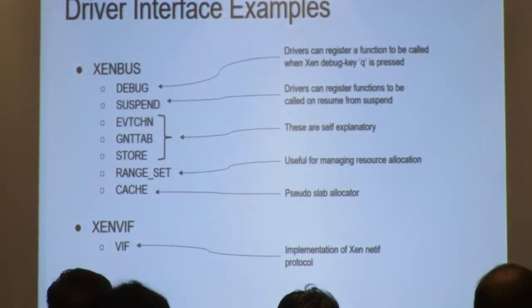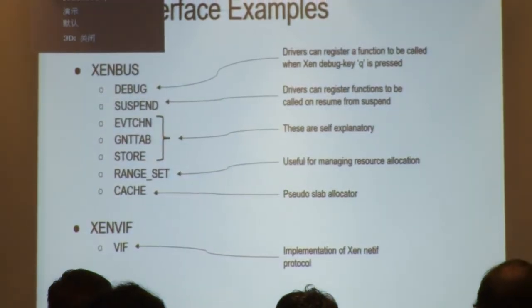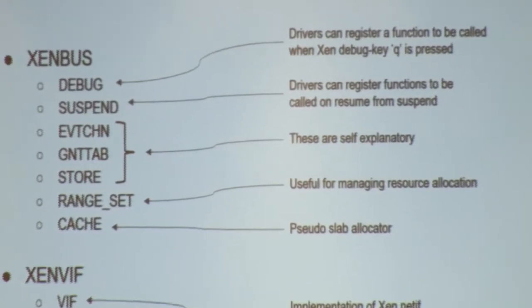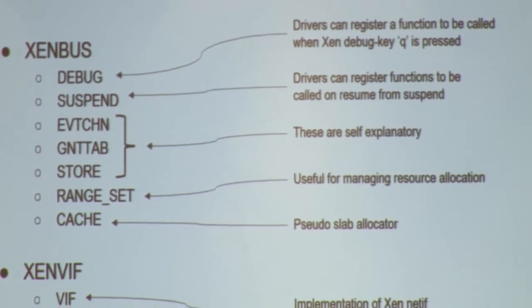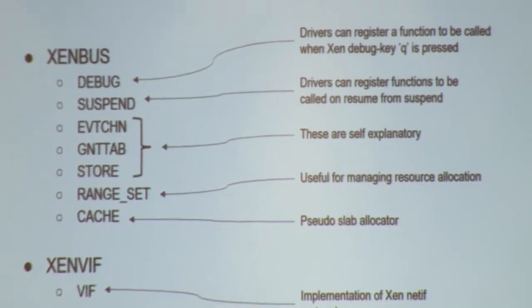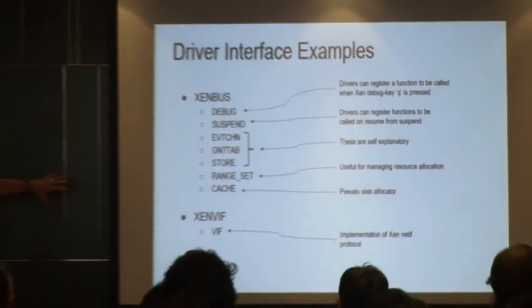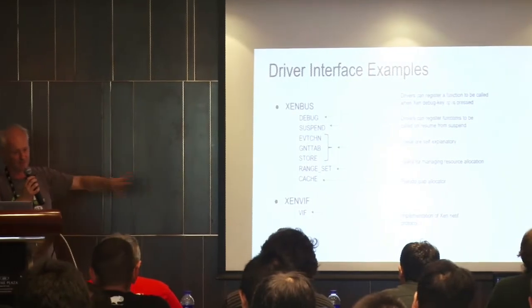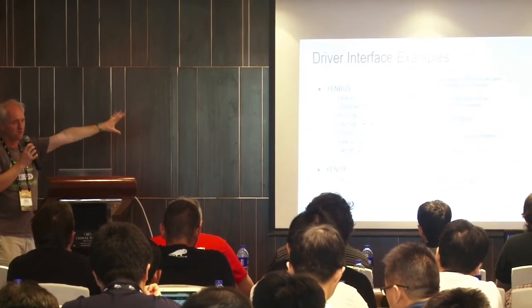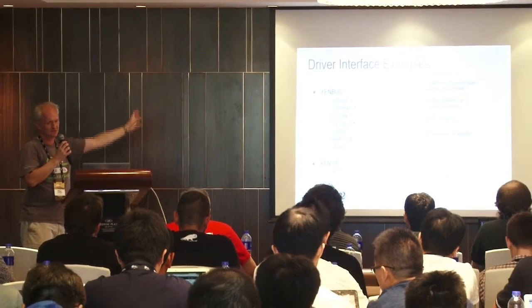Then there's the VIF protocol implementation. Because Windows is restrictive when you write a network driver — you have to subscribe to the NDIS Miniport interface, which very much restricts what a network driver can do in terms of making kernel calls — you put most of the network implementation in the class driver. The class driver doesn't have to be a Miniport driver, it's just a standard Windows kernel driver with much more freedom. So the ZenNet driver is a very thin NDIS Miniport driver that literally makes calls into ZenVIF, and ZenVIF does the work.